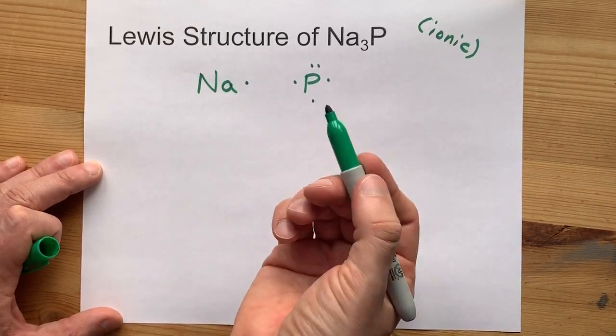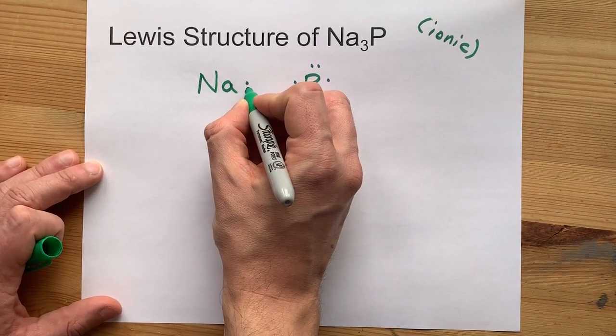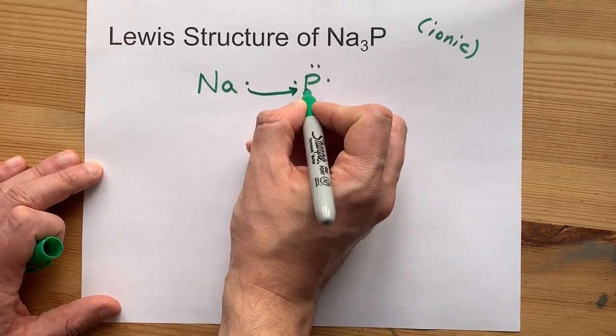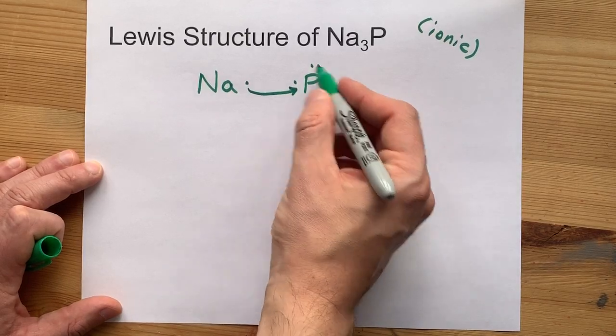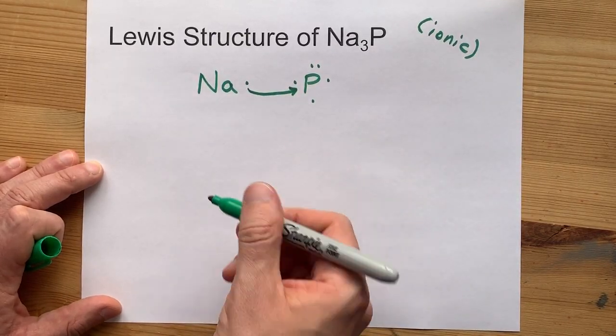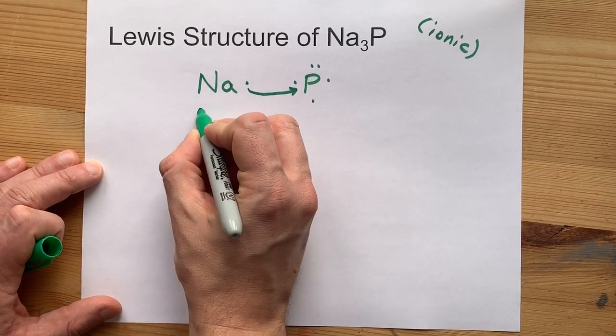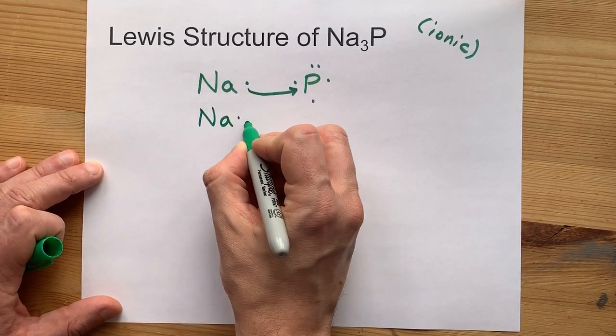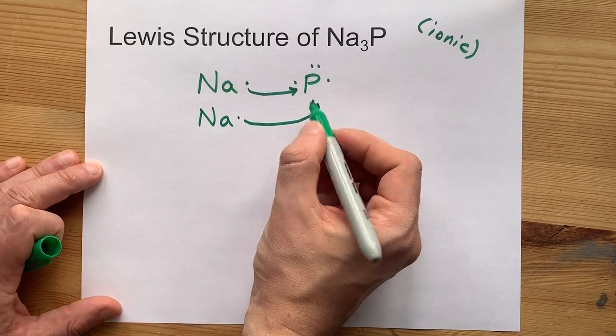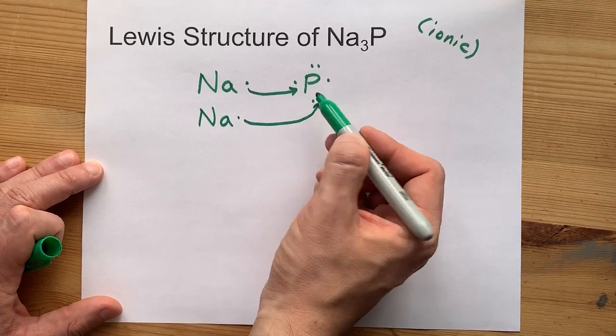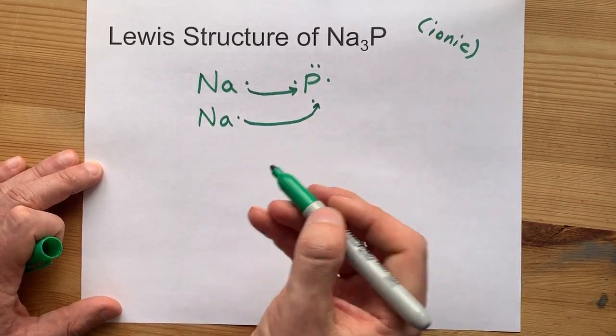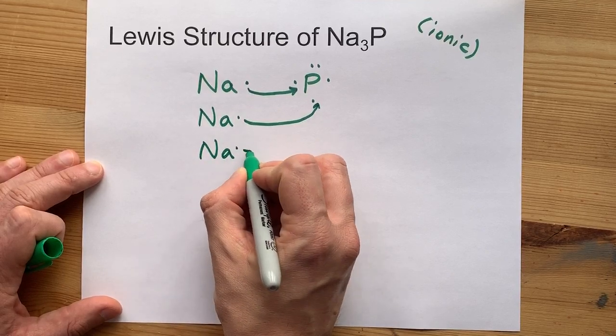Metals will gladly give up their electrons. So this sodium atom gives its electron away to phosphorus. Now phosphorus has 6. It needs 8. Where is it going to get 2 more? Well, another sodium atom can come along and donate its electron. But now phosphorus has 7, which still isn't enough. How about a third sodium?